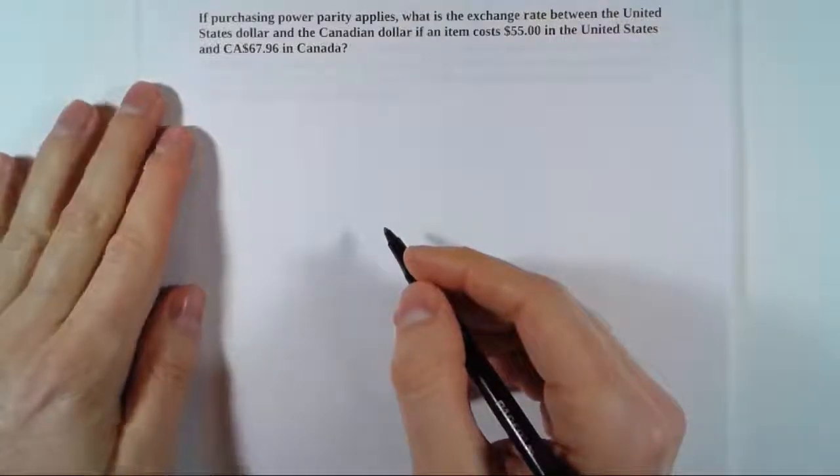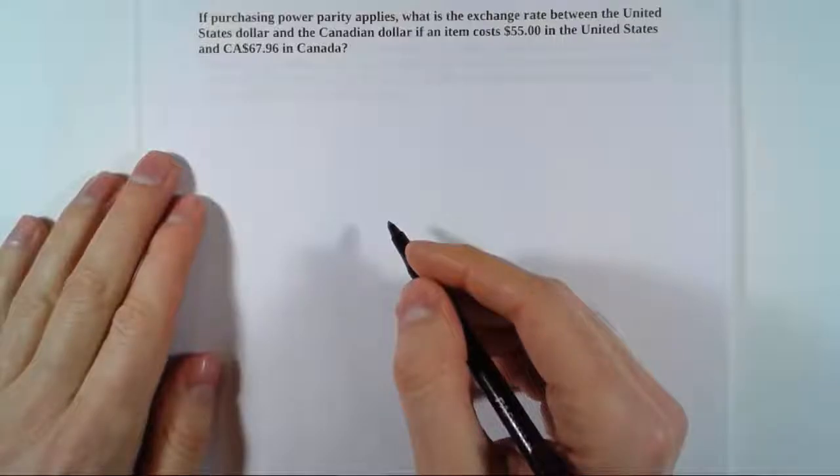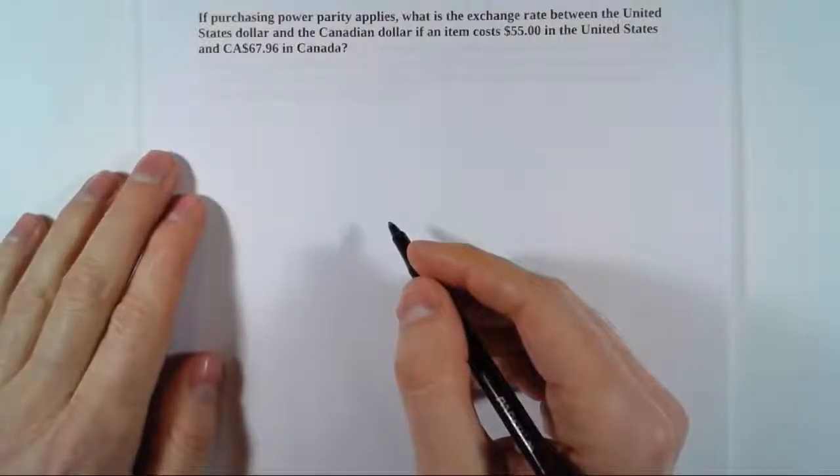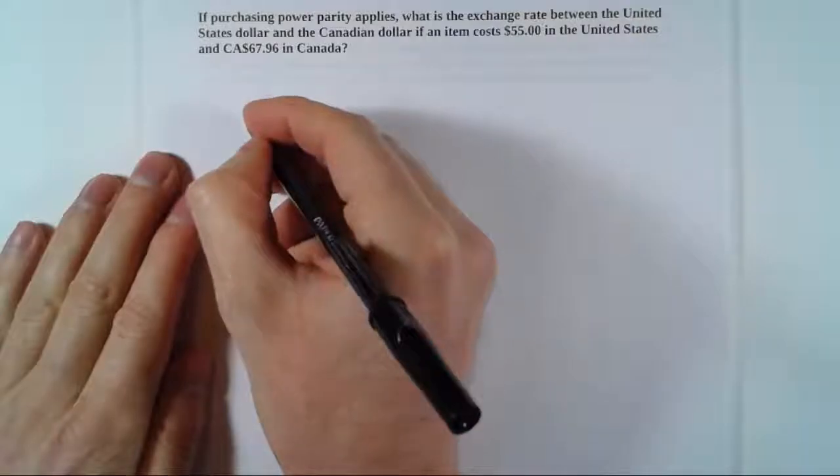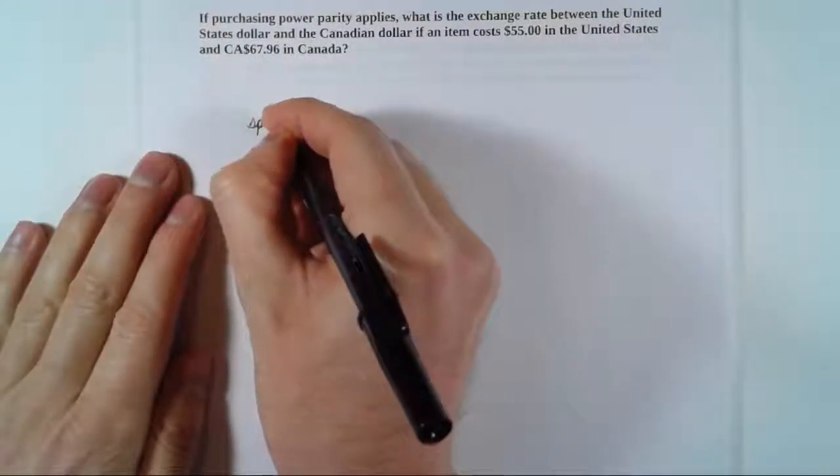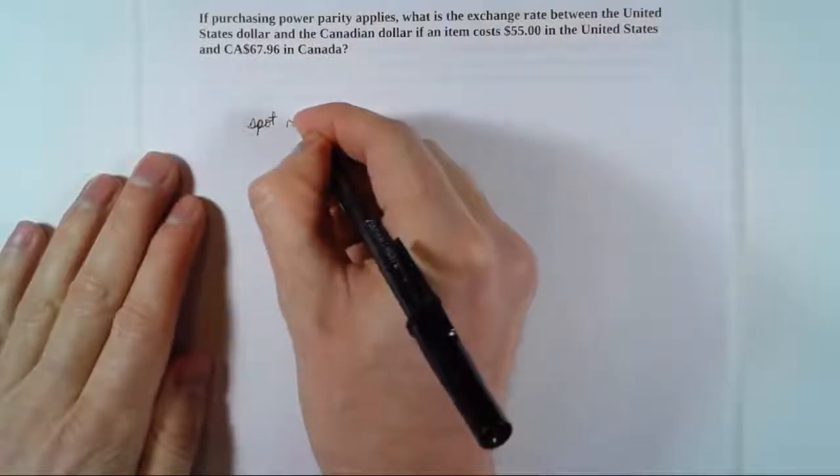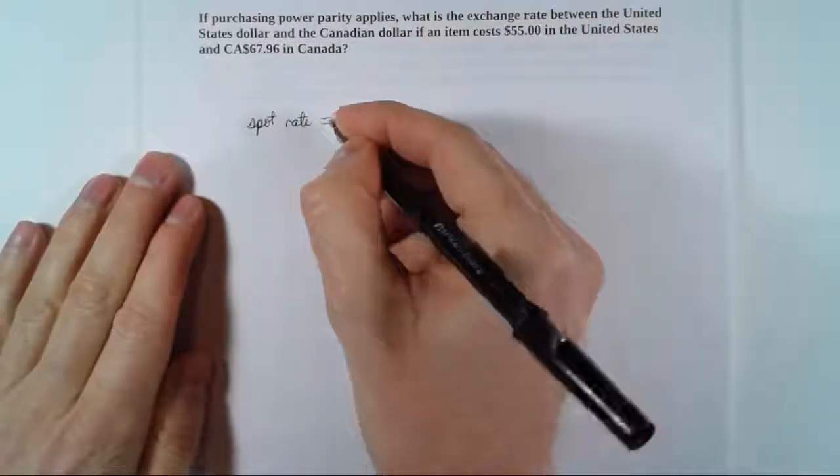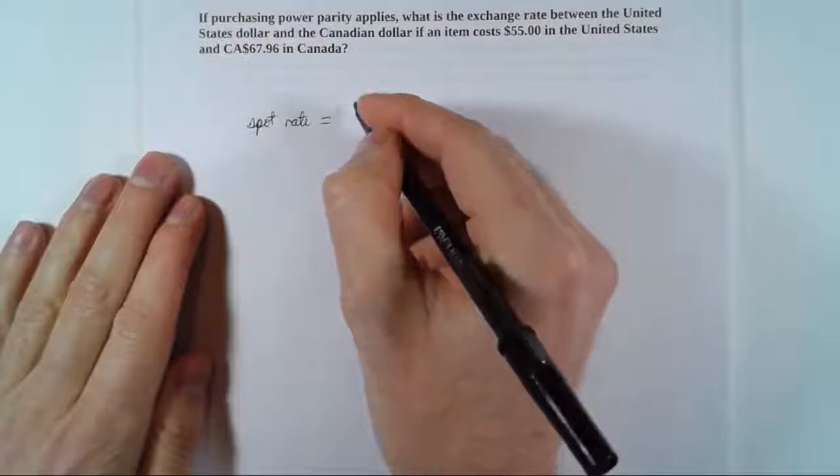So if we have prices from two different countries and if purchasing power parity applies, we can find the spot exchange rate between the currencies by finding the ratio of the prices. What that means is that our spot rate of exchange between these two currencies is going to be the ratio of the prices.